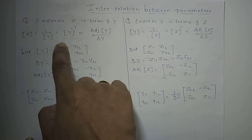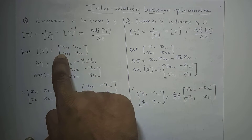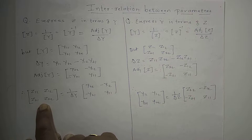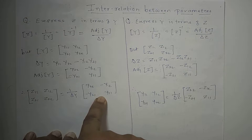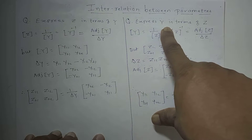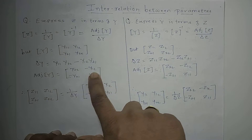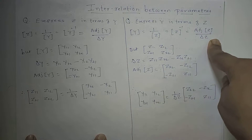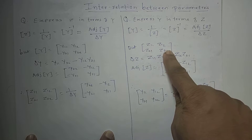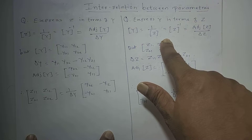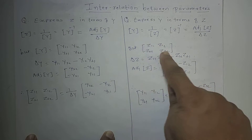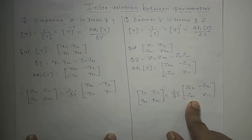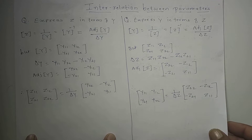The y matrix determinant will be y11 times y22 minus y12 times y21. The adjoint of this 2×2 matrix requires interchanging y11 and y22, and changing the signs of y12 and y21 — giving y22, y11, minus y12, and minus y21. Therefore, the z parameter in terms of y parameter has this formula, and we derive z in terms of y. Similarly, express y in terms of z: y equals 1 by z, which equals z inverse, which equals the adjoint of z upon the determinant of z. The determinant delta-z equals z11 times z22 minus z12 times z21, and the adjoint requires interchanging z11 and z22 and changing the signs of z12 and z21. So the y matrix in terms of the z matrix is obtained in this way.